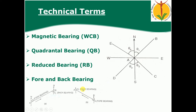There are various designations of magnetic bearings. The first is WCB — Whole Circle Bearing. Any angle measured in a clockwise direction from the north towards the survey line is called a whole circle bearing. Whole circle bearing is always between 0 degrees and 360 degrees.